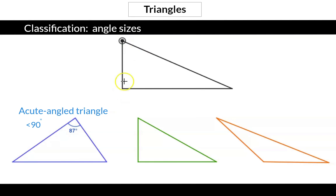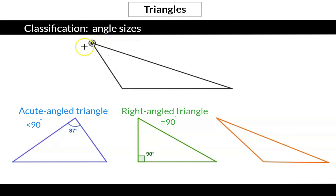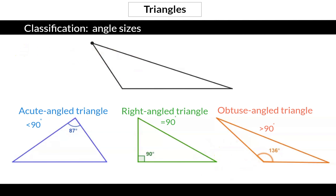Next up we have an angle of 90 degrees. If the biggest angle in a triangle is exactly 90 degrees we call it a right angled triangle. And when we make that angle even bigger, so bigger than 90 degrees, it is called an obtuse angle, and the triangle with the biggest angle being bigger than 90 degrees is called an obtuse angled triangle.